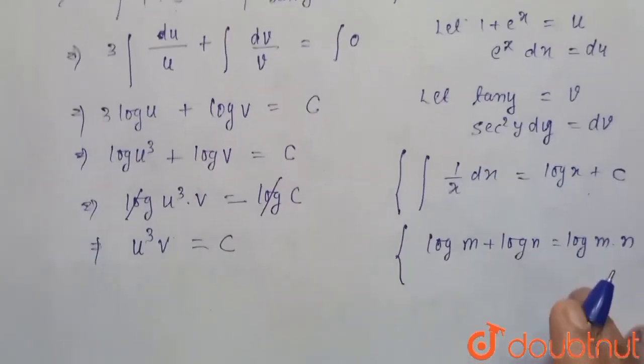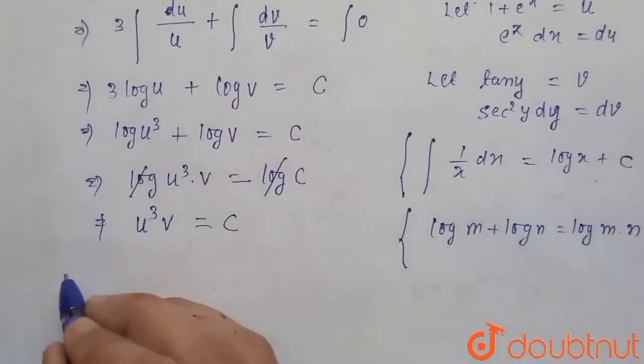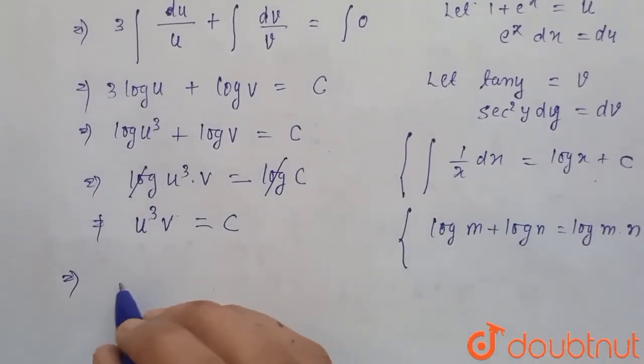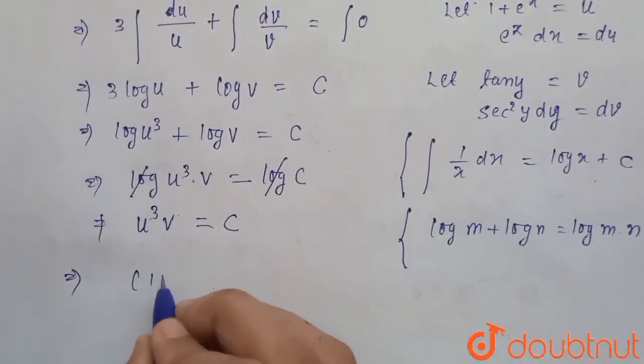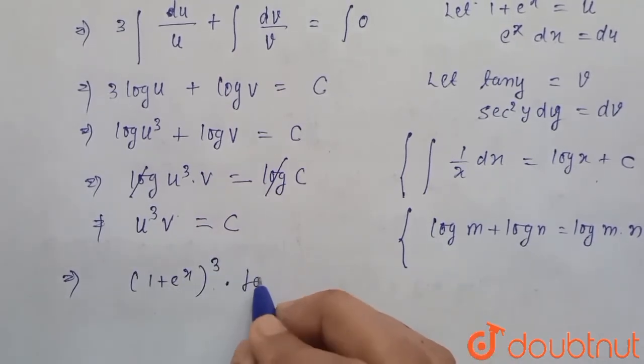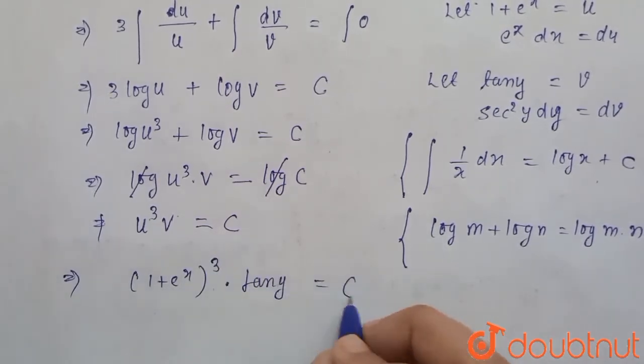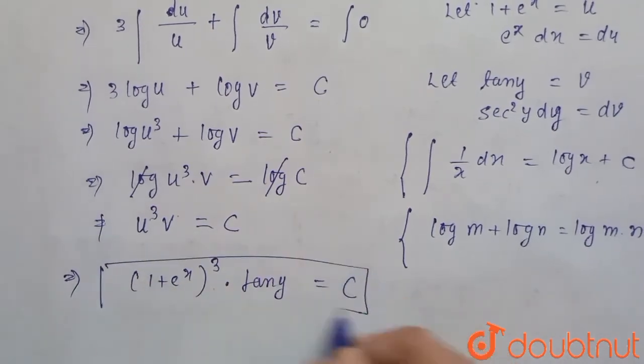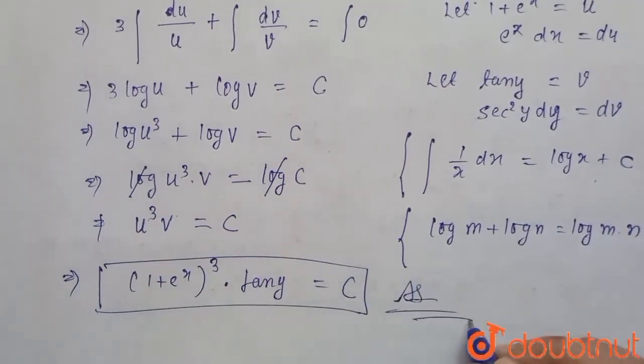equals c. Now put the value of u and v. So here u is 1 plus e^x to the power 3, and v is tan y equals c. So this is the solution of our differential equation.